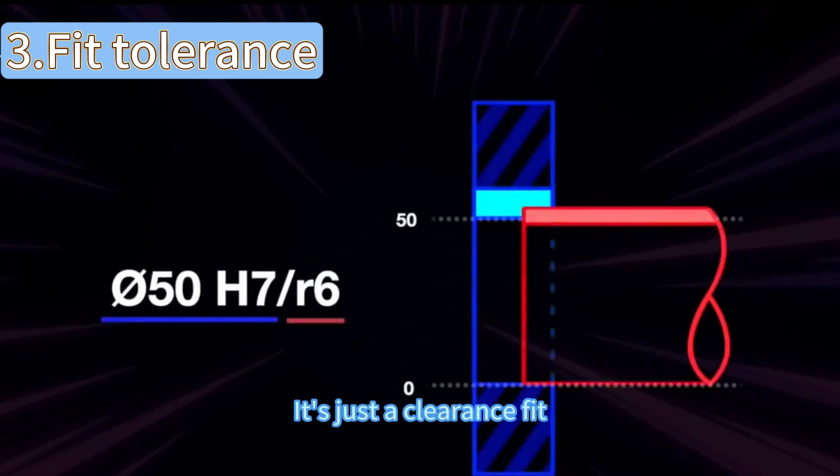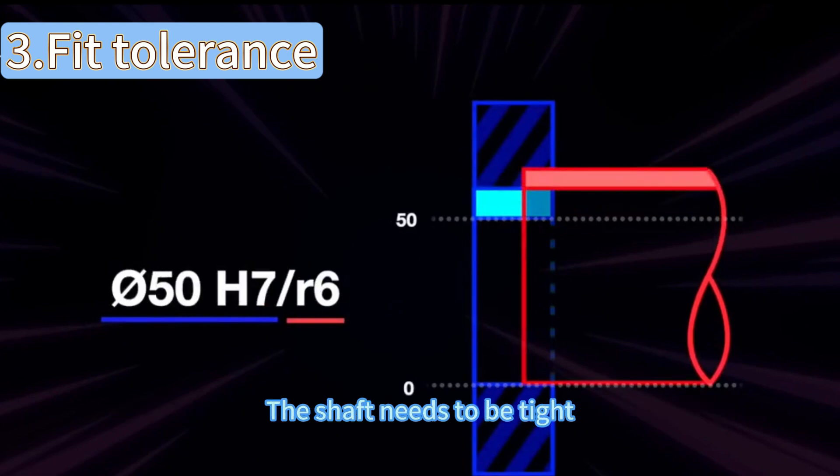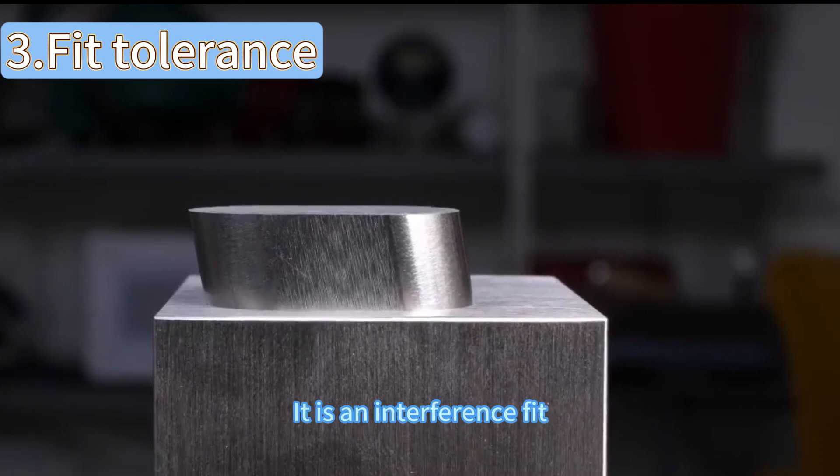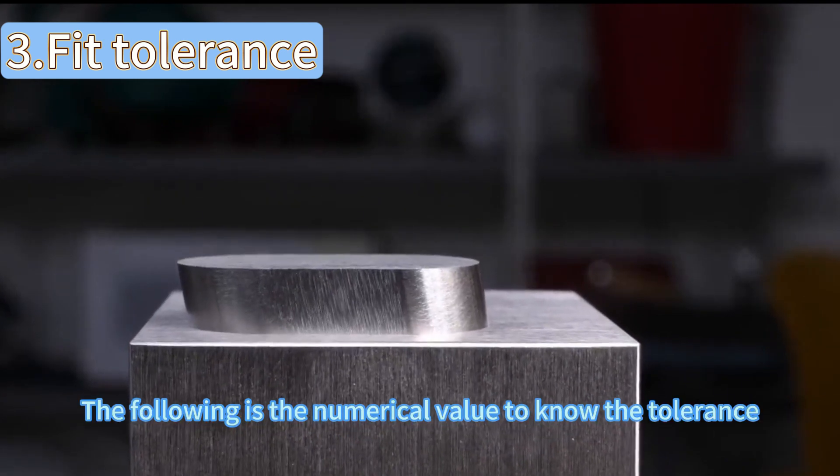Ø50 H7/r6 means based on a hole with a diameter of 50, the shaft needs to be tight level 7, which is an interference fit.